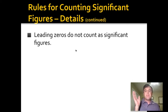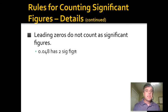Zeros that are in front of the first integer value that's not a zero do not count. So the number 0.048 has two significant figures—the four and the eight. This number has two significant figures.